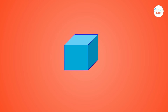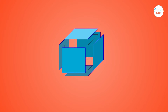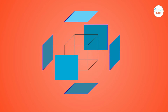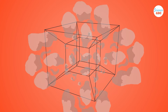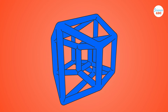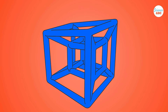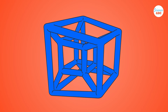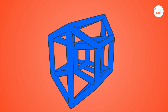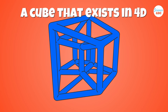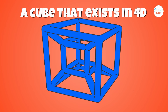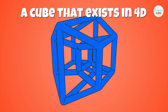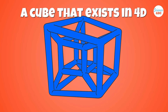Now, take a three-dimensional cube and replace each face, which is currently a square, with a cube. The shape you now hold is a four-dimensional Tesseract. Simply put, a Tesseract is a cube that exists in four-dimensional space, or the 4D analog of a cube.